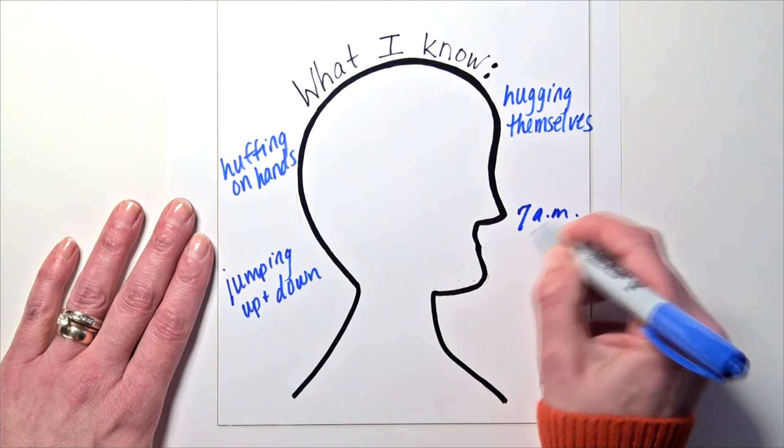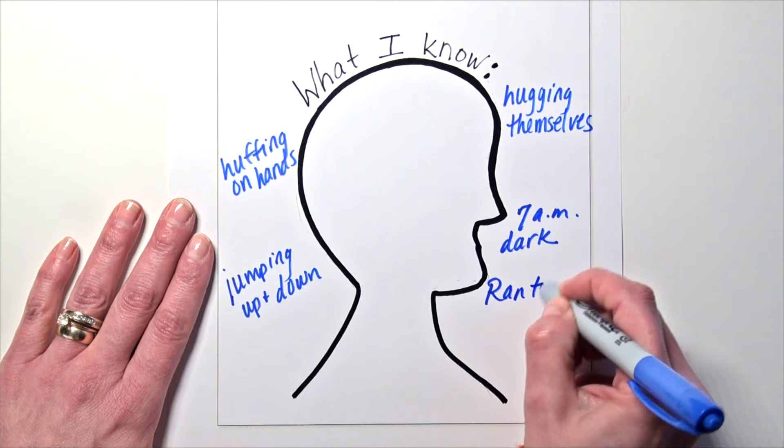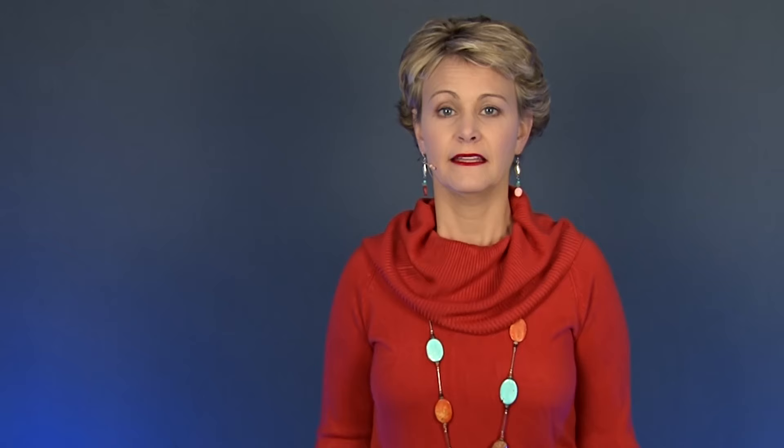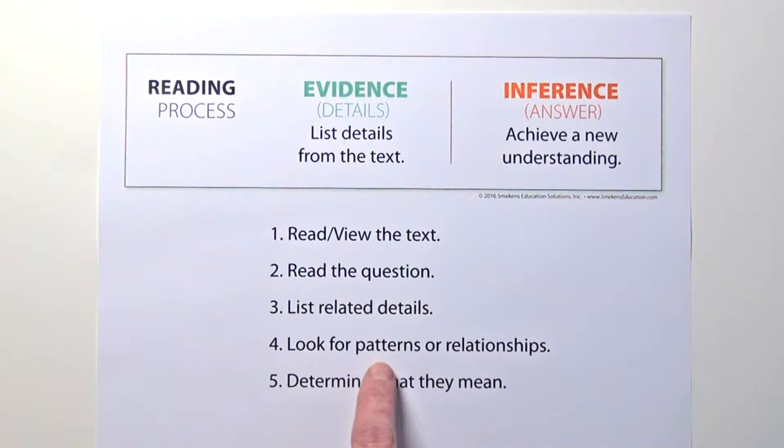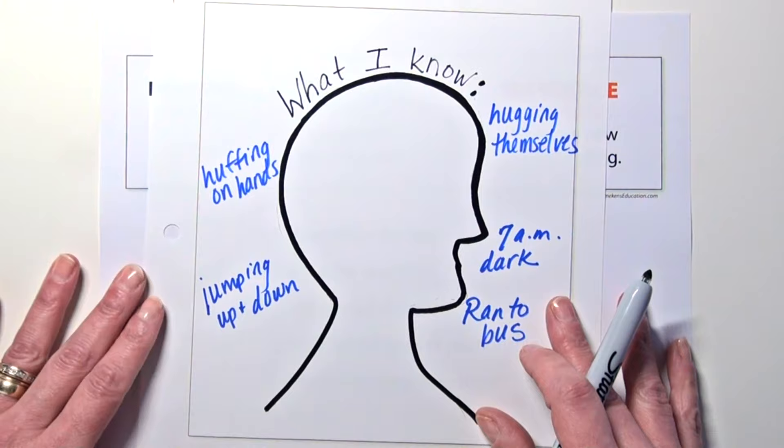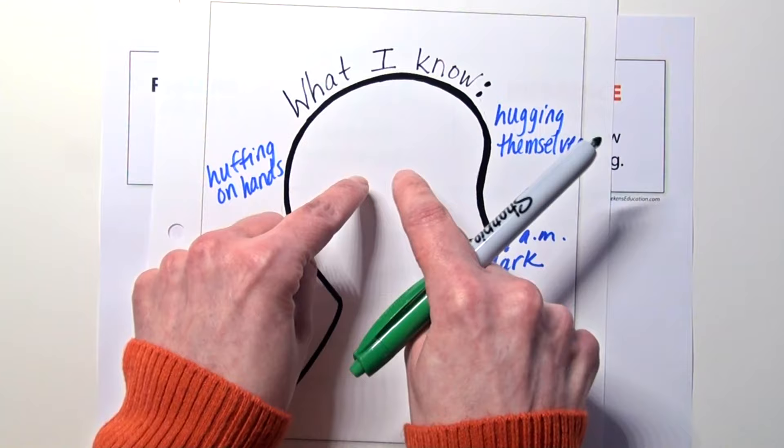Other related details: it was 7am and dark outside, and they ran to the bus when it arrived. Keep in mind, step three is listing the relevant details. There were other details — like there were a half dozen kids and one kid hollered that the bus was coming — but some details aren't relevant to the question. What season is it? We have to help students determine important from unimportant information.